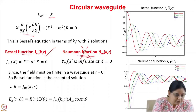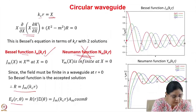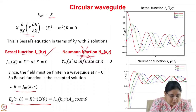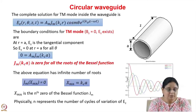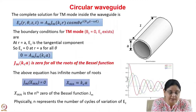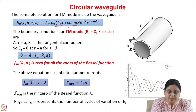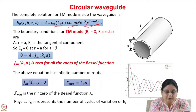The solution for R is Jm(kc r). The total solution for Ez is Ez(r, theta, z, t) equals Am times Jm(kc r) times cos(m theta), propagating in the z direction with propagation constant kg — Bessel function variation in r, cosine variation in theta, and a propagating wave in z.